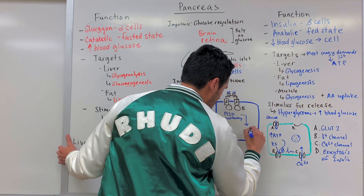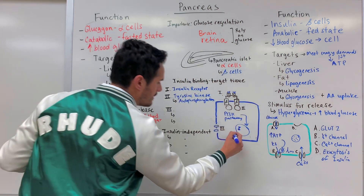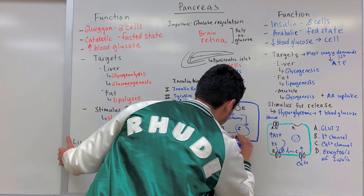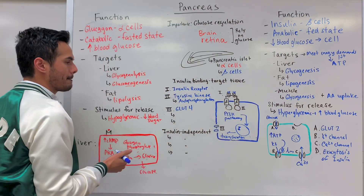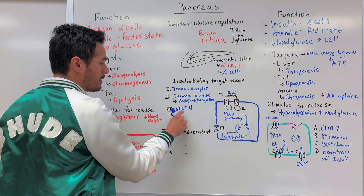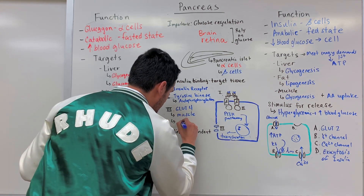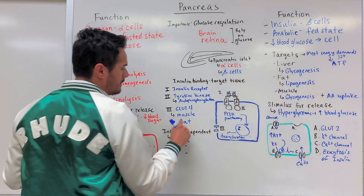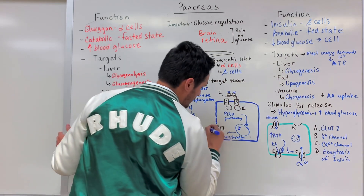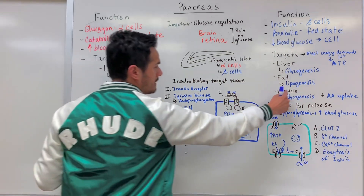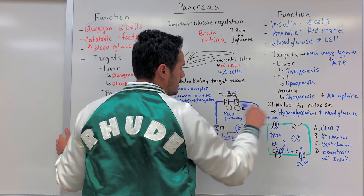Activation of the PI3K pathway results in translocation of the GLUT4 transporter. GLUT4 is found within muscle as well as fat cells. You have to have insulin binding to its receptor in order to get the translocation of GLUT4, so that glucose can enter the cell in muscle and fat — allowing lipogenesis, glycogenesis, and activation of an amino acid transporter.